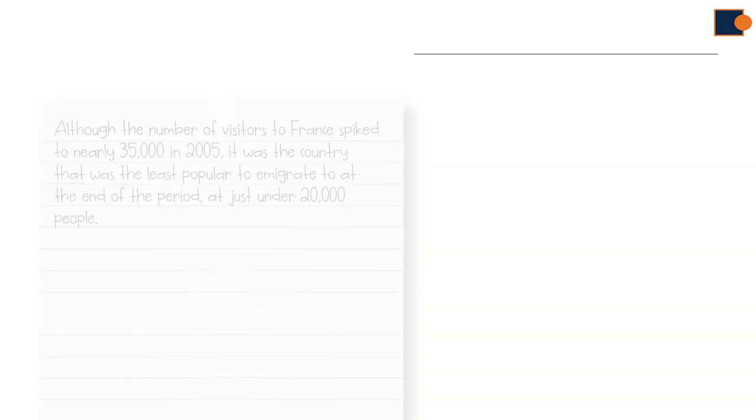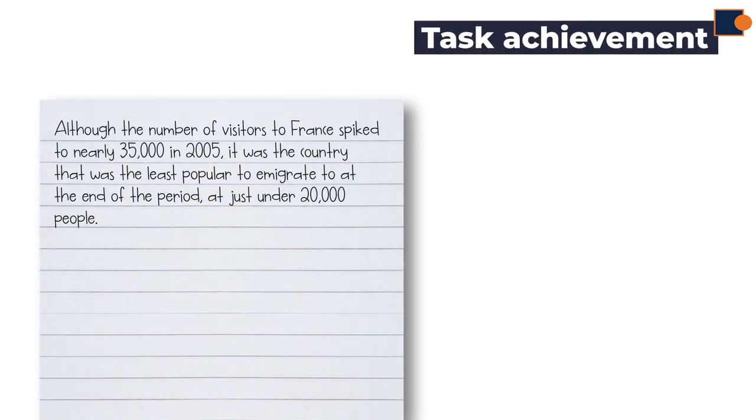Let's have a look at the final body part. In terms of task achievement, again comparison is given regarding France, which is the least popular country to emigrate to. Key features here are spiked in 2005, and all points are supported with the data and period.